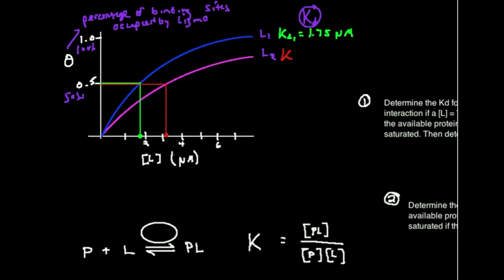So the KD2 for the second curve or the second ligand is approximately 3.1. And since the units here are micromolar for concentration, the KD is also in units of micromolar.